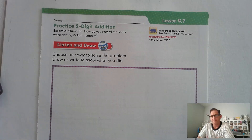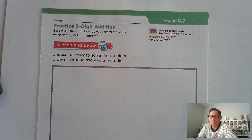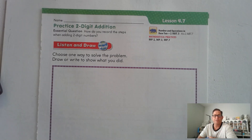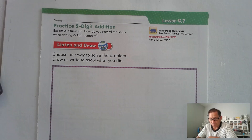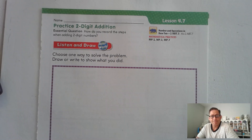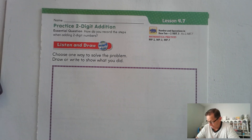So choose one way to solve the problem — any of the methods that we've talked about up to this point, like compensation, break apart the addends, using the standard algorithm, using models. Choose one way to solve the problem I give you. After I finish reading the question, pause the video, draw or write to show what you did to record the steps for the two-digit numbers I give you. Then restart the video and see if you came up with one of the ways that I am going to do.